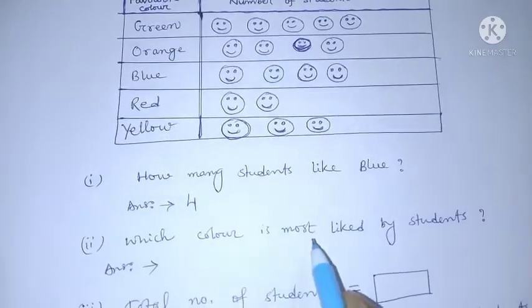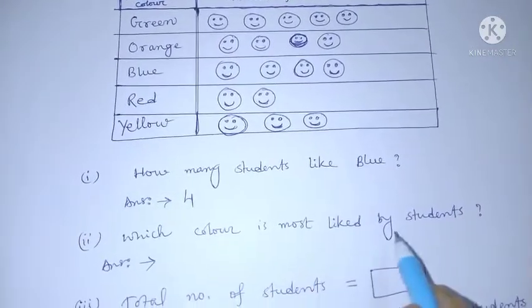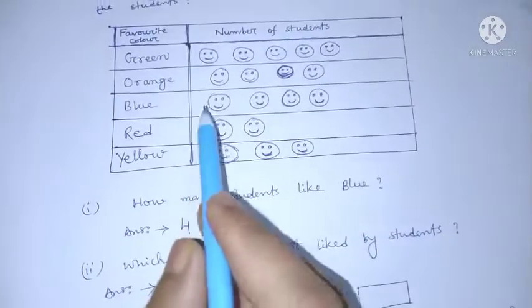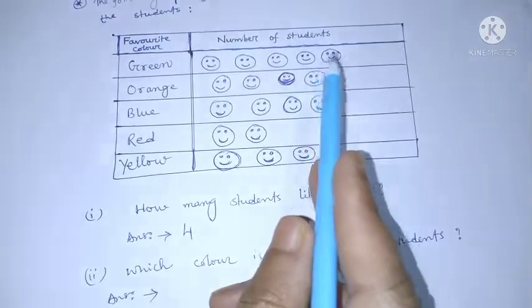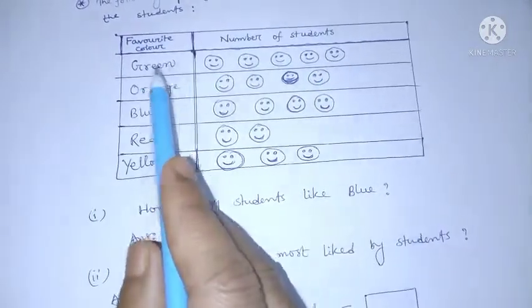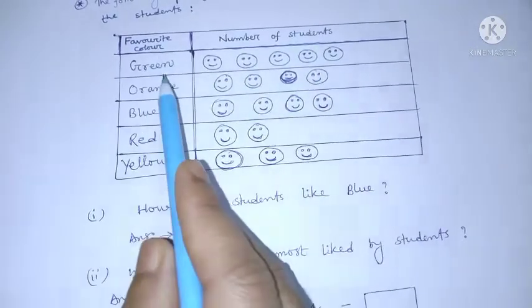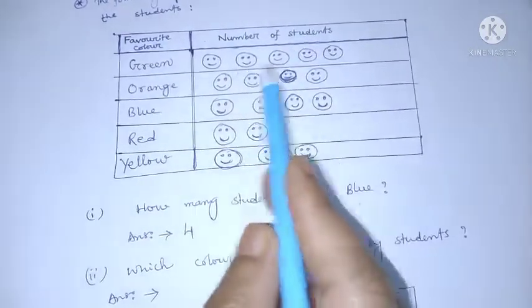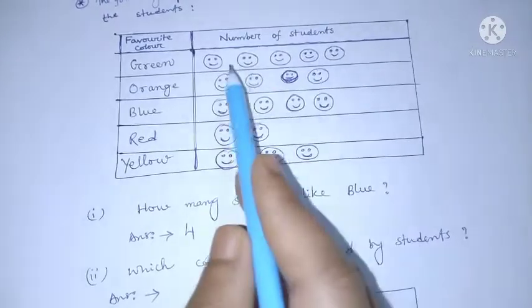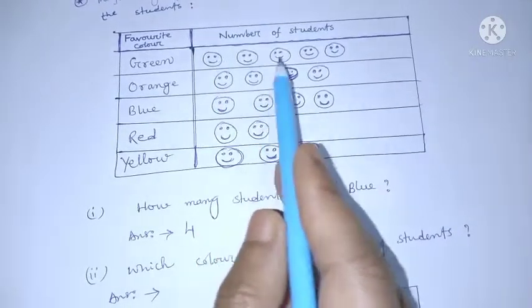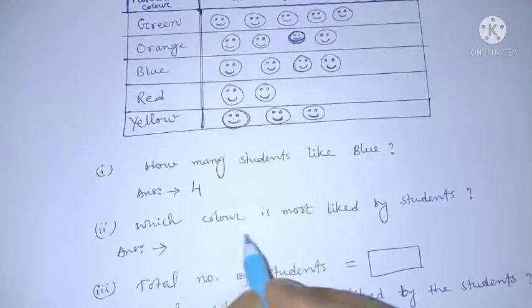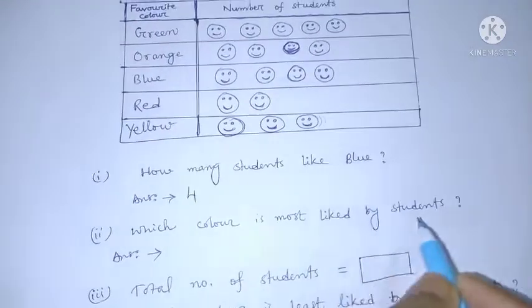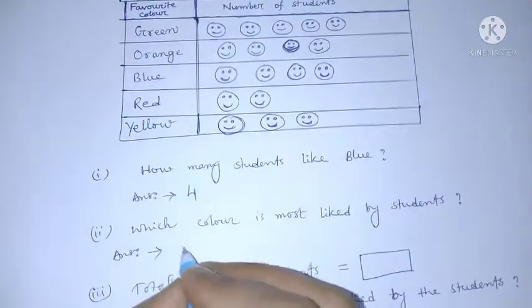Which color is most liked by students? Green — one, two, three, four, five — five students. So which color is most liked by students? Green.